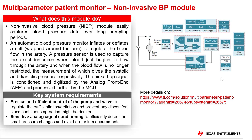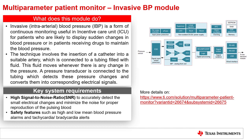The fifth module is an invasive blood pressure, or IBP, module. Invasive or intra-arterial blood pressure is a form of continuous monitoring used in intensive care units, or ICUs, for patients likely to display sudden changes in blood pressure, or for patients receiving drugs to maintain blood pressure. The technique involves inserting a catheter into a suitable artery connected to fluid-filled tubing. A pressure transducer detects pressure changes and converts them into electrical signals. Key requirements include high SNR and safety features such as high and low mean blood pressure alarms and tachycardia or bradycardia alerts.